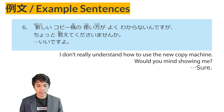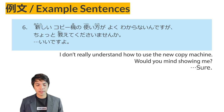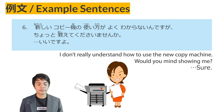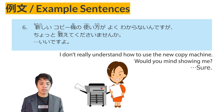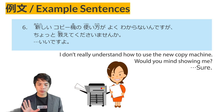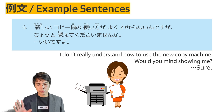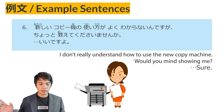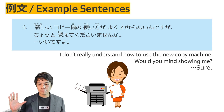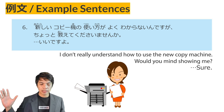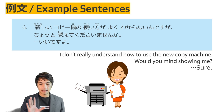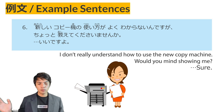Example sentence No. 6: Atarashii kopiiki no tsukai kata ga yoku wakaranai desu ga, chotto oshiete kudasaimasen ka? — I don't really understand how to use the new copy machine; would you mind teaching me? Oshiete kudasaimasen ka is used to ask someone a favor, showing more politeness. Ii desu yo. — Sure, no problem.